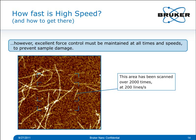Here we see a zoom-out of the area where all the previous movies were taken. The central area was imaged over 2000 times at 200 lines per second. No imaging window was created by the repeated interactions. Of course, this sample — while being a biosample — is also a static sample in air. So let's move on to some real examples of dynamic AFM applications.